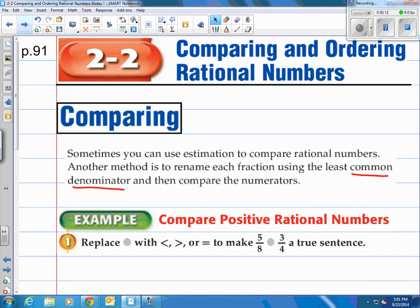Remember, rational numbers are any numbers that can be written as fractions. For comparing purposes, sometimes you can use estimation to compare rational numbers. Another method is to rename each fraction using the least common denominator and then compare the numerators. The denominator is the bottom of a fraction. Denominator on the bottom, numerator on top.